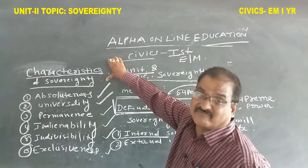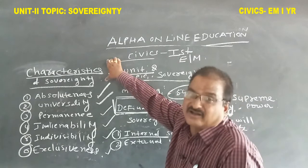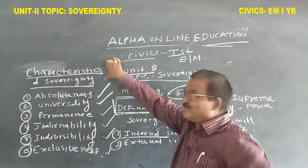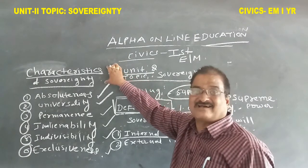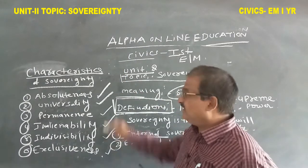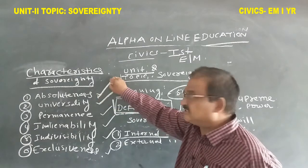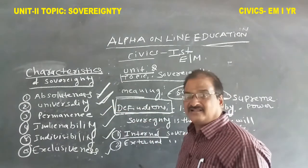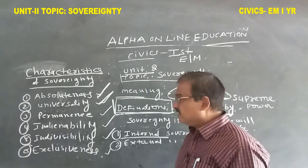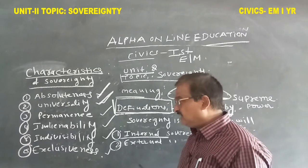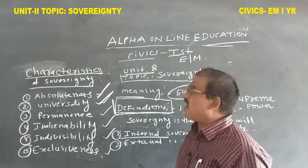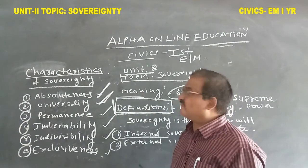The characteristics of sovereignty — in Telugu, 'mukya lakshanadu' (main characteristics), 'Sarvabhaumadhi karam yukka mukya lakshanadu.' The six characteristics are: absoluteness, universality, indivisibility, and exclusiveness, among others.